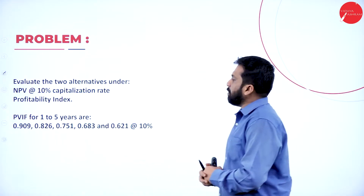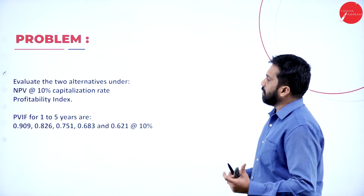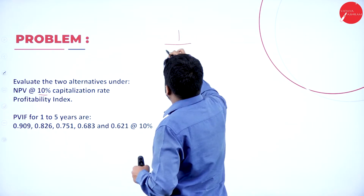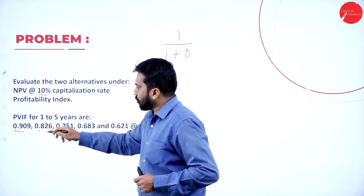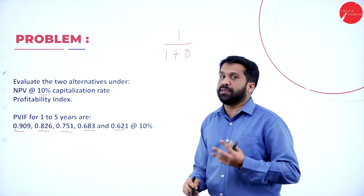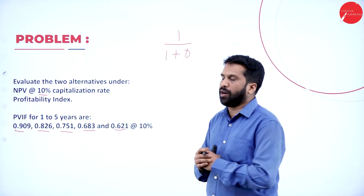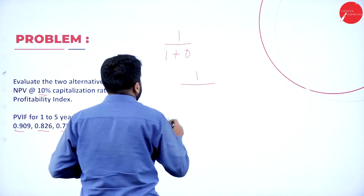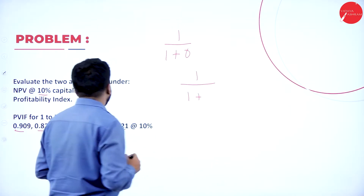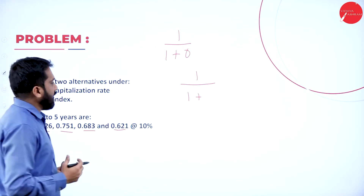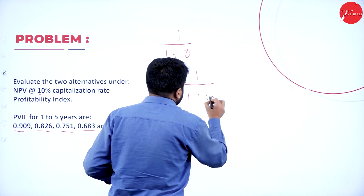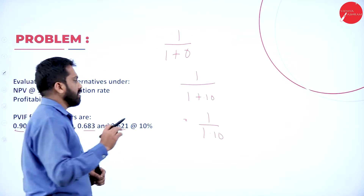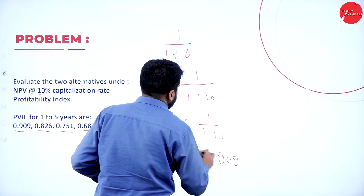The PV factor for 1 to 5 years is given. If it is 10%, remember how to calculate: 1 divided by 1 plus rate. It is already given in the question. Sometimes they don't give you — then how to find out? 1 divided by 1 plus R, where R is 10%, that is 0.10, so it becomes 1 divided by 1.10. If you calculate, you will get 0.909.